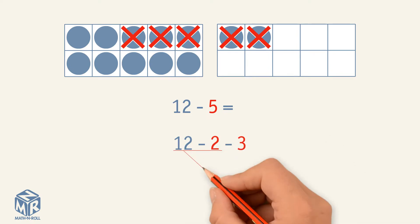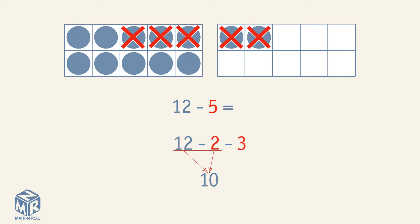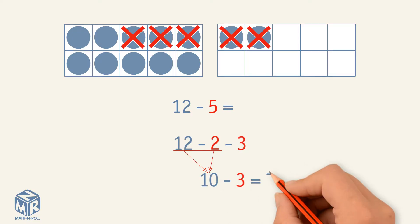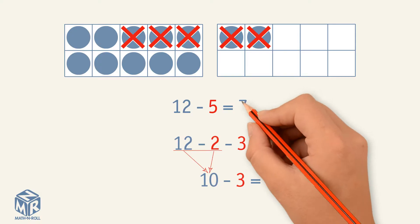12 minus 2 equals 10. 10 minus 3 equals 7. So 12 minus 5 equals 7.